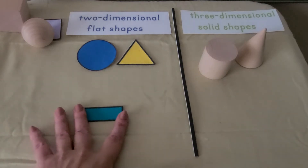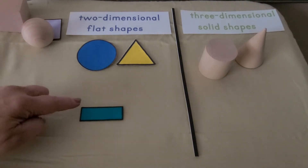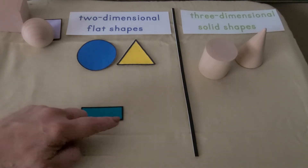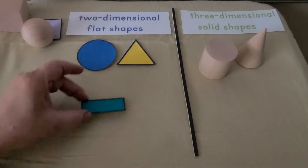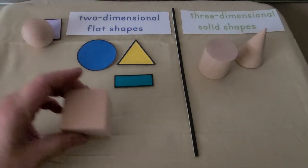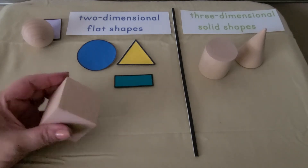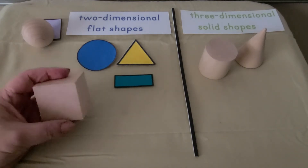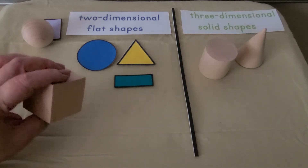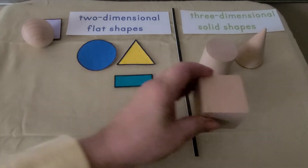Here's a flat shape — that's a rectangle. It has four sides that are straight and four square corners. That's a two-dimensional flat shape. This shape has six flat sides that are shaped like squares. This is a solid shape — this is a cube.